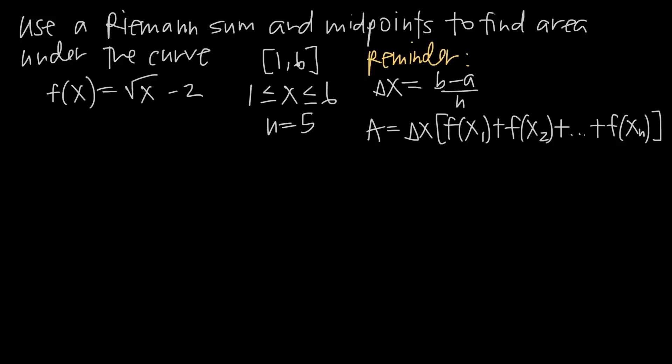We're interested in the area in that interval under the curve, and we're going to be using 5 rectangles or 5 subintervals to approximate the area. We know that because we've been told that n = 5.